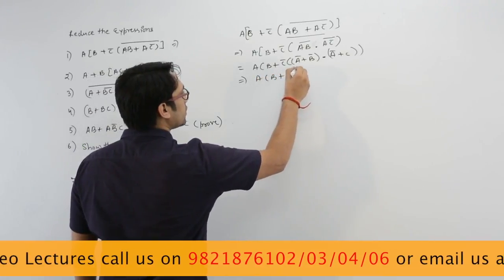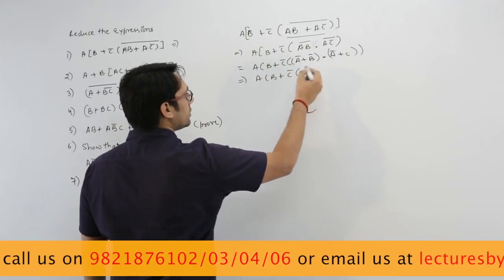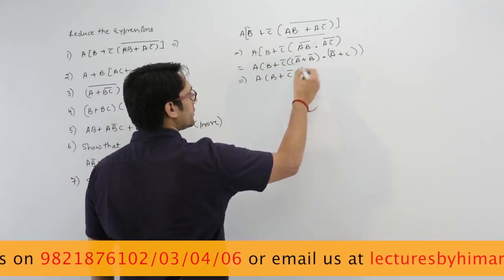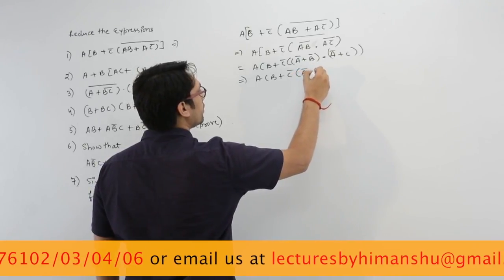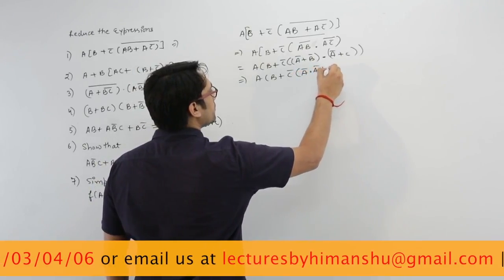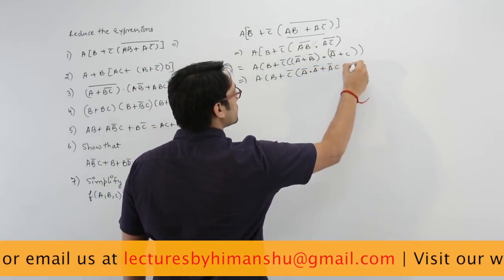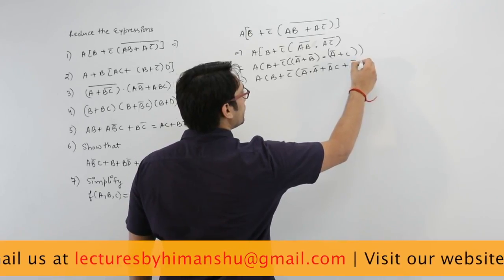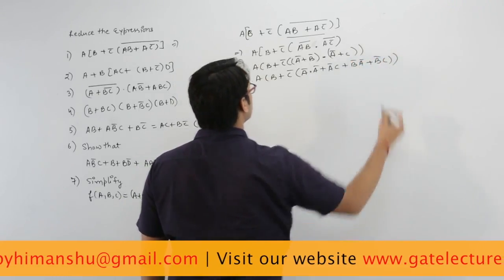Taking b plus c complement and expanding the bracket, it is a'·a' plus a'·c plus b'·a' plus b'·c.